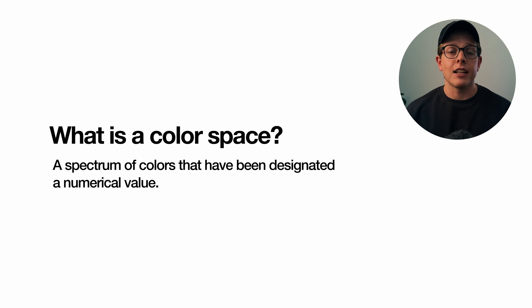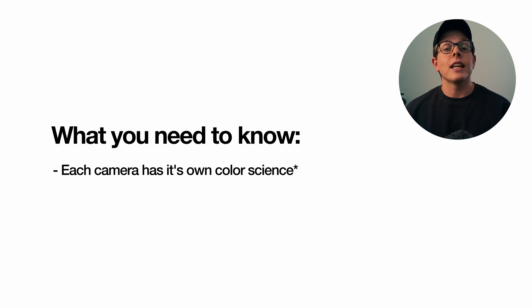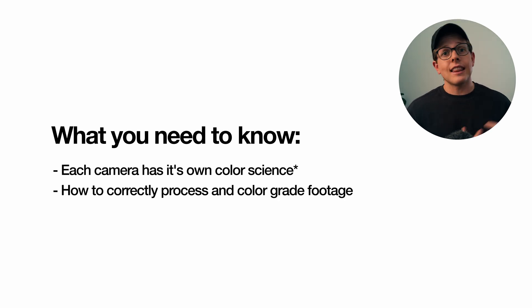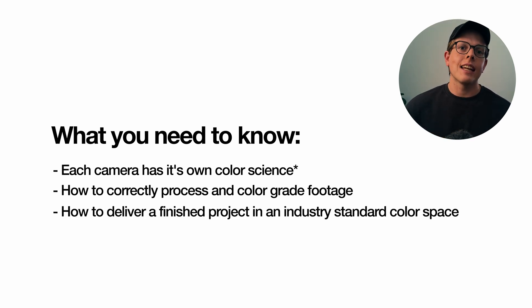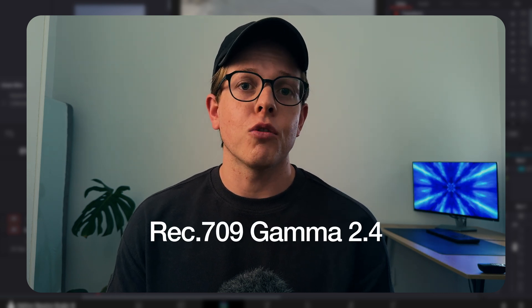A color space is a spectrum of color that has been designated a numerical value. It's a super complex thing to explain so we're not really going to go into it because this is for beginners. What you need to know is that each camera has its own color space, its own gamma — which is essentially the luminance values or brightness. We need to be able to take that footage, process it, color grade it, and put it out at an industry standard color space. This is what we as colorists do.